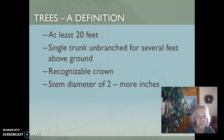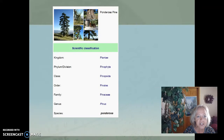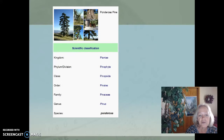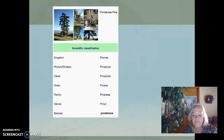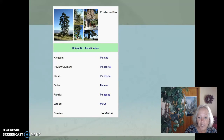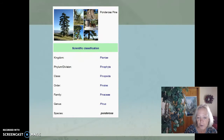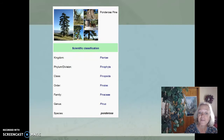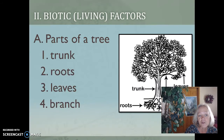In scientific classification, remember it's Kingdom, Phylum, Class, Order, Family, Genus, Species. The way to remember that from grade school was 'King Philip came over for good soup.' I'm sure you have a lot of other versions of that, but we'll keep it there.